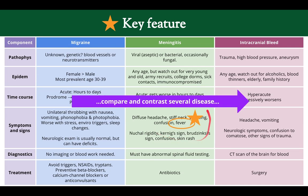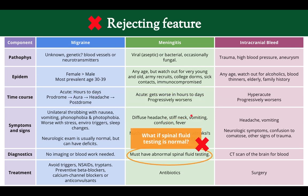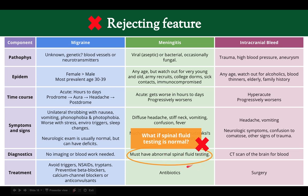The key feature here is fever — it's present only in meningitis, but not in the other two illness scripts. It's rare to find something that's present in only one. Finally, rejecting features: for meningitis, you have to have abnormal spinal fluid. So if you have normal spinal fluid, it rejects the diagnosis of meningitis. This is also usually rare, but it's good to know when these rejecting features are present.